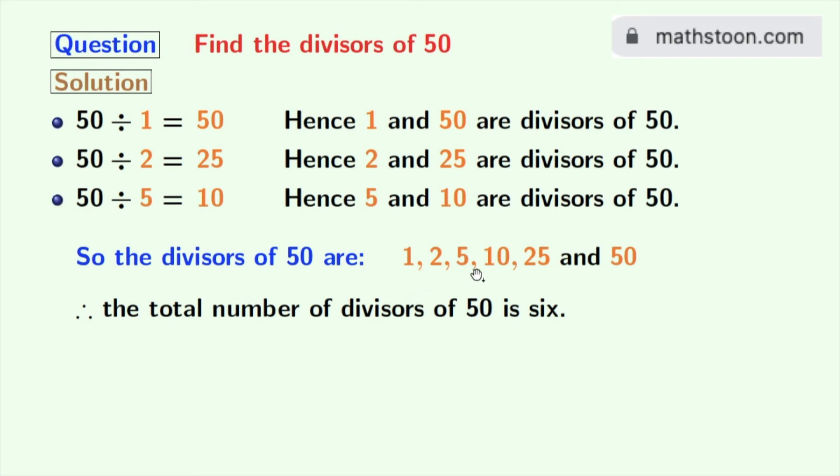Now if we look at these divisors, we can see that 2 and 5 among these numbers are prime numbers. Because these two numbers do not have any divisor other than 1 and this number itself. So we can easily say that the prime divisors of 50 are 2 and 5.